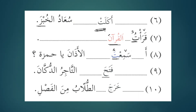We have al-tullabu and we have learned previously that when the doer is apparent, whether it is singular, dual, or plural, the verb that we have to use is only for the singular.